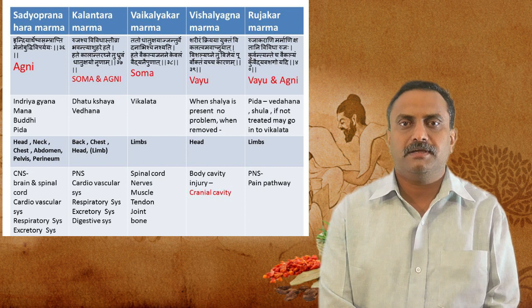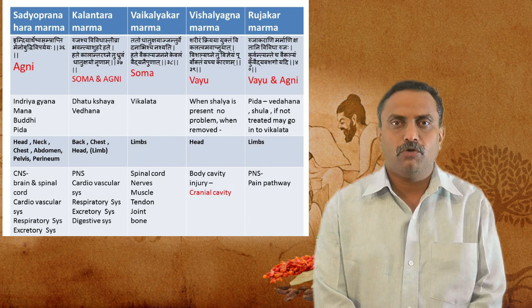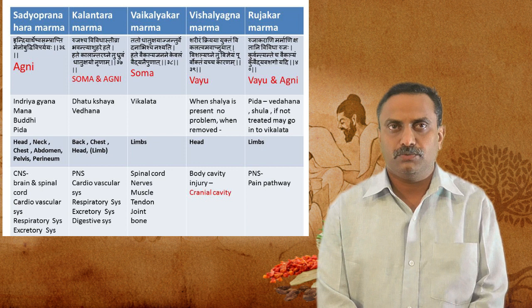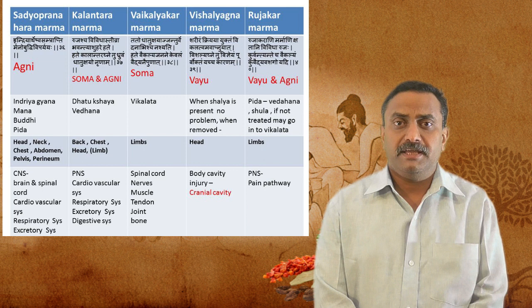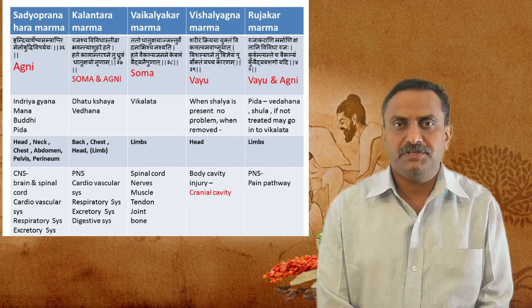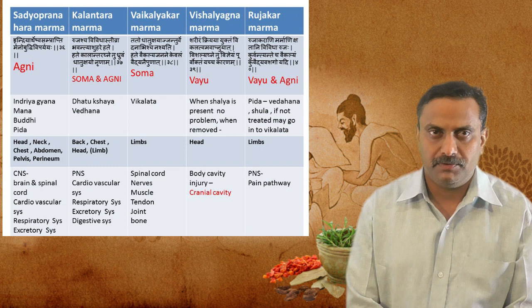Now dealing with Samanya Bitha Lakshana: In Sadyopranahara Marma, Agni is the predominant Panchamahabhuta. Any injury to Sadyopranahara Marma will cause the person to die within seven days due to Agni Kshinatva. The major areas covered by Sadyopranahara Marmas are the head, neck, chest (heart/Rudaya), abdomen (Nabi), pelvis (Basti), and perineum (Buddha). These Marmas are basically present in the center of the body.